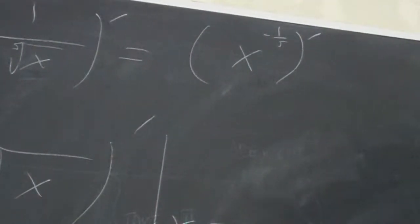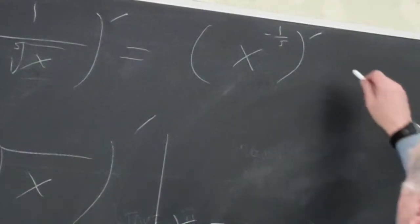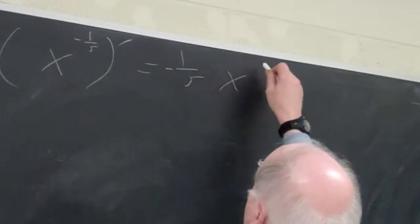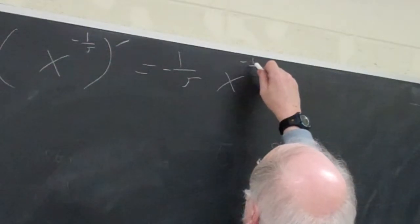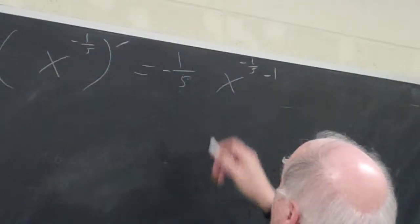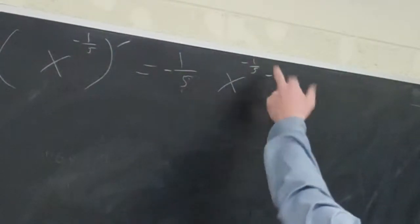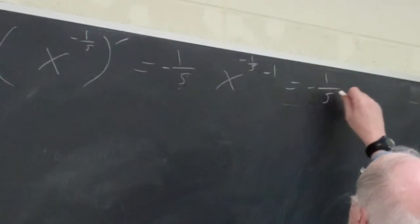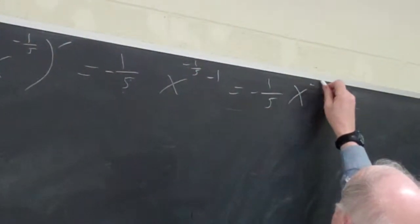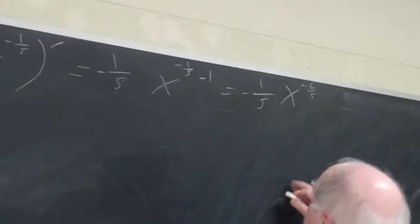The whole idea is to see all of these as just x to the n. I bring 1/5 here, and this is x. This is negative 1/5 minus 1. Let me write that better. That's negative 5/5. So it should give me negative 1/5 times x to the negative 6/5.